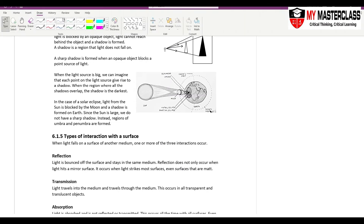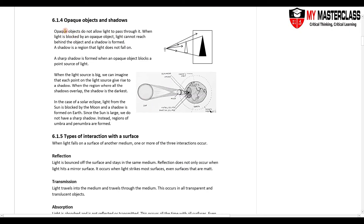What if light gets blocked? When light gets blocked by opaque objects — because opaque objects do not allow light to pass through — we see a shadow. A shadow is a region that light does not fall on. A sharp shadow is from a point source of light — a very small source. Light rays come out from the light bulb in all directions; some fall on the paper, some get blocked by an object and cannot fall on the paper, creating a shadow.